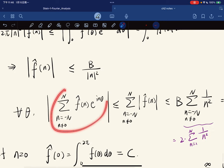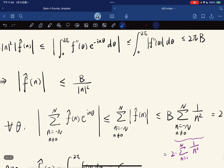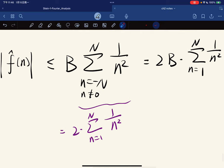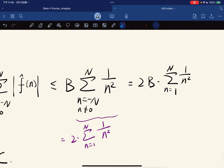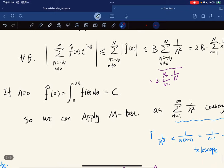Now for any θ, this sum is less than equal to this sum, where n is not equal to zero. And each of them, we apply this inequality we got here. And notice that when n is negative, the square is still the same. So it's just really this. And we got this.